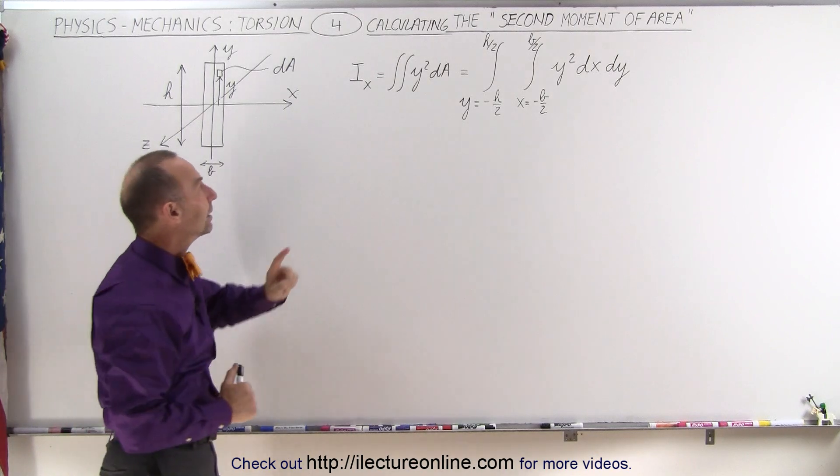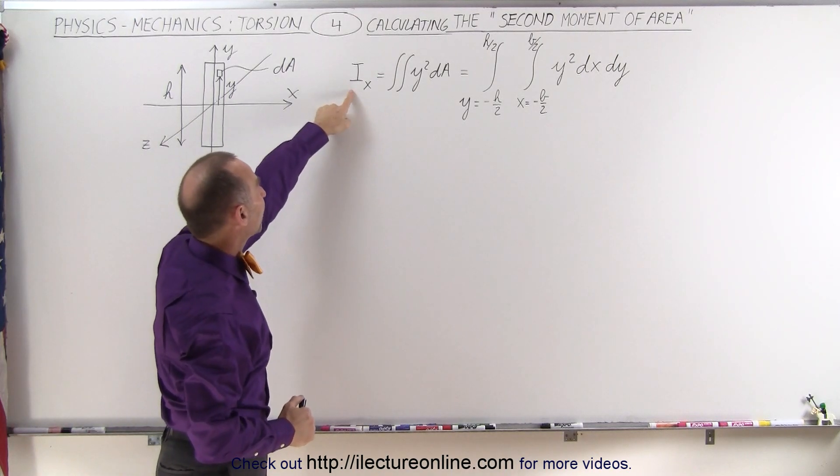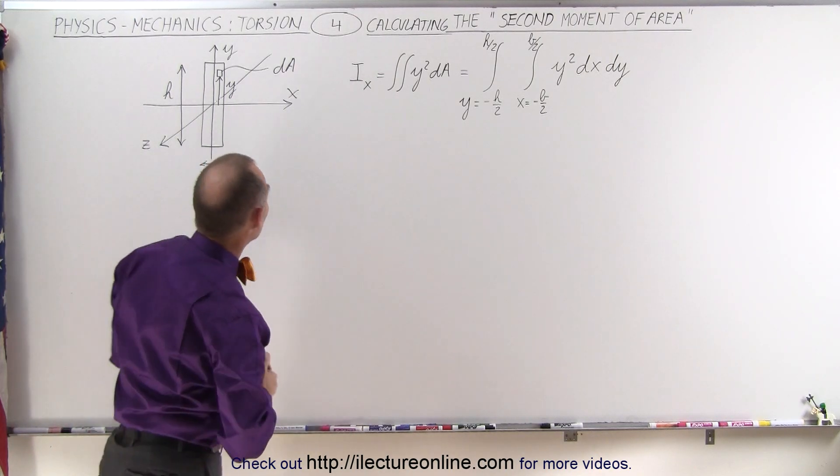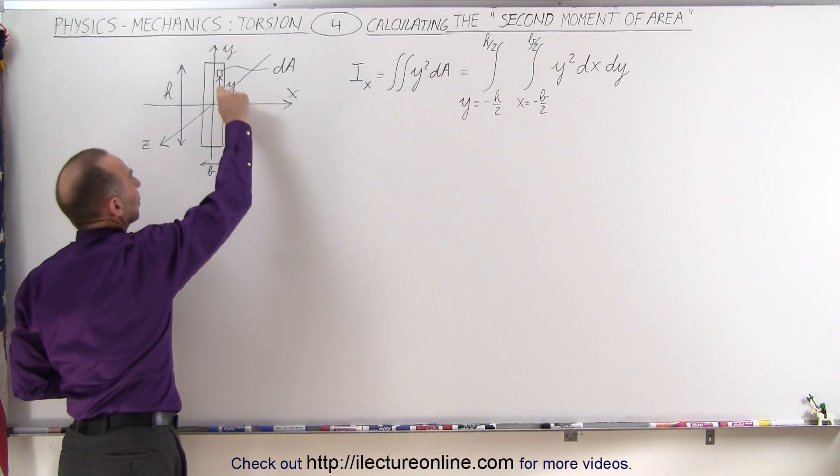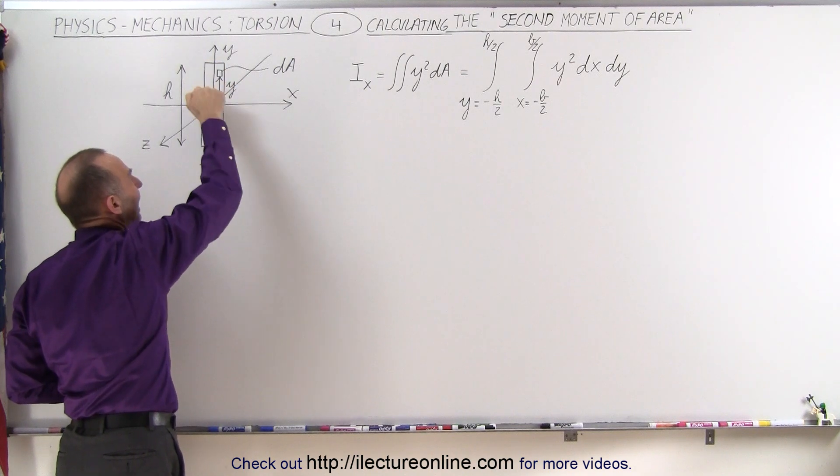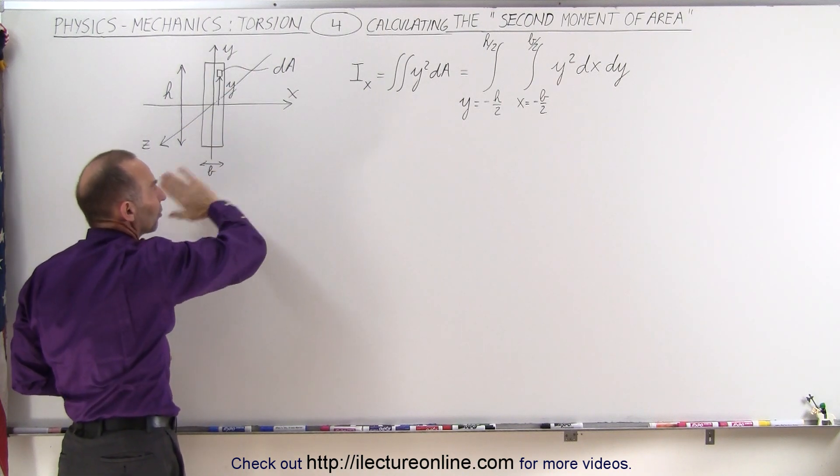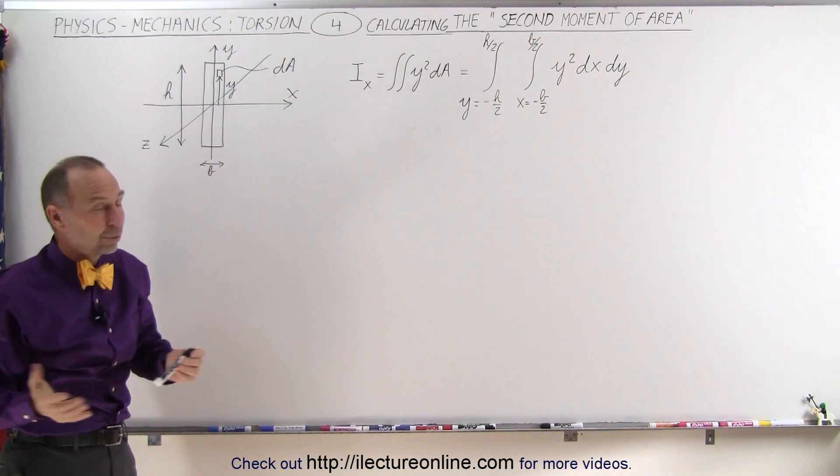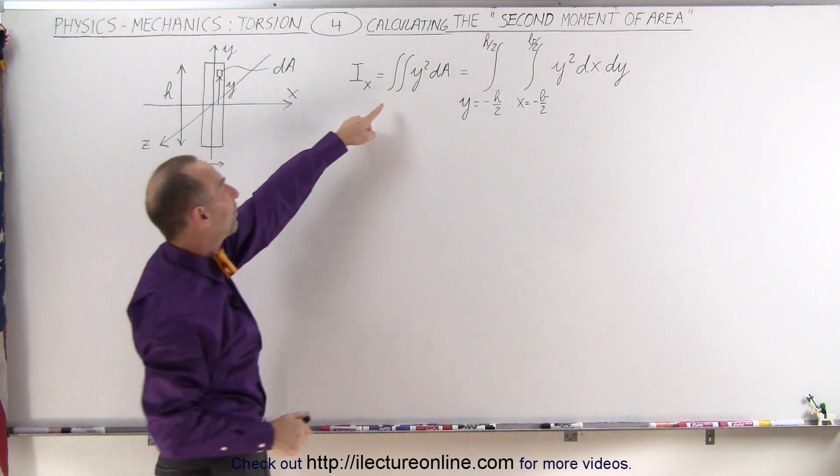We're first going to calculate the second moment of area relative to the x-axis. In other words, we're trying to find the area multiplied times the distance to the x-axis of each small little dA all the way across the cross-section and sum them all up. Of course, that's equal to the integral, and here we have it defined.